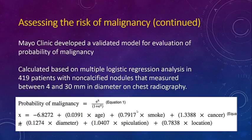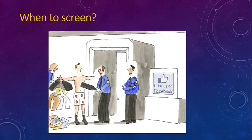The Mayo Clinic developed a calculator and application to assess the risk of lung cancer, based on multiple logistic regression analysis in 419 patients with non-calcified nodules measuring between 4 and 30 millimeters in diameter.